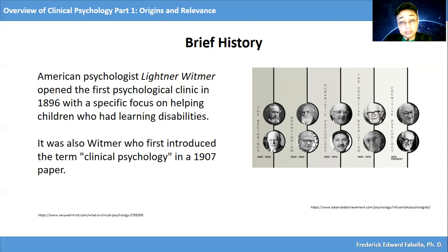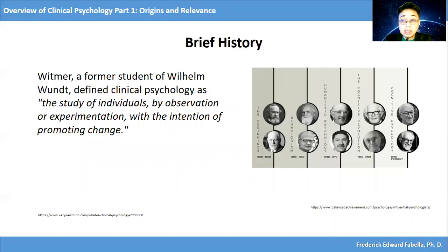It was also Witmer who first introduced the term clinical psychology in a 1907 paper. Witmer, a former student of Wilhelm Wundt, defined clinical psychology as the study of individuals by observation or experimentation with the intention of promoting change.